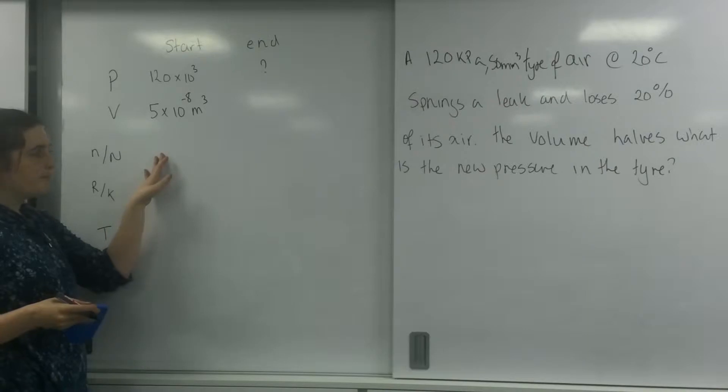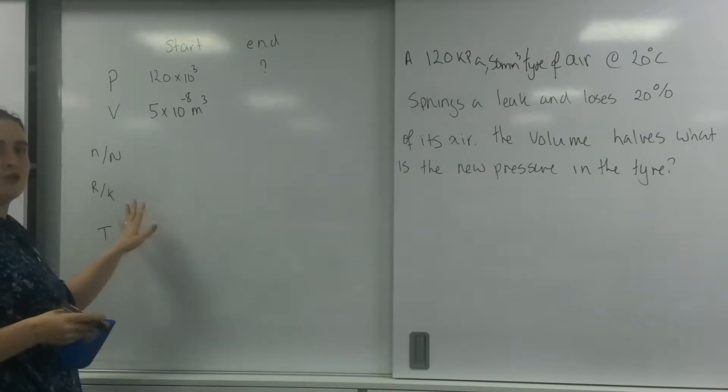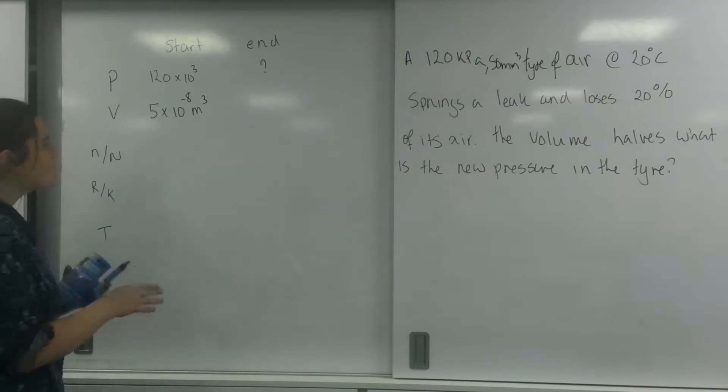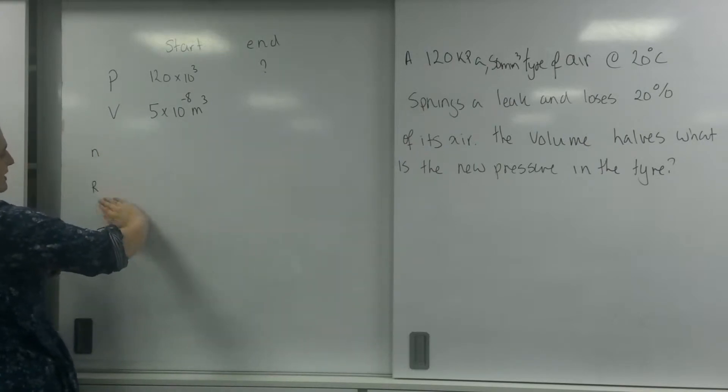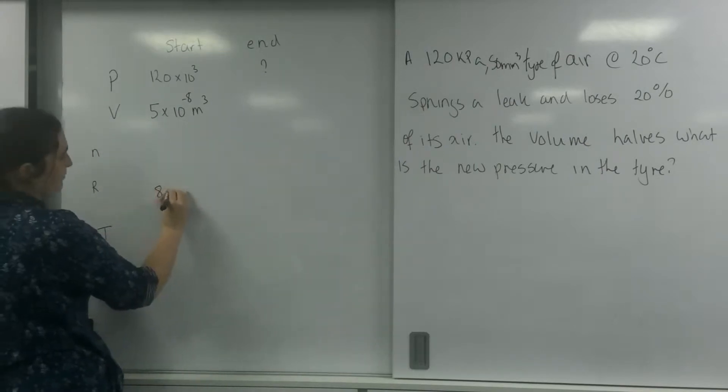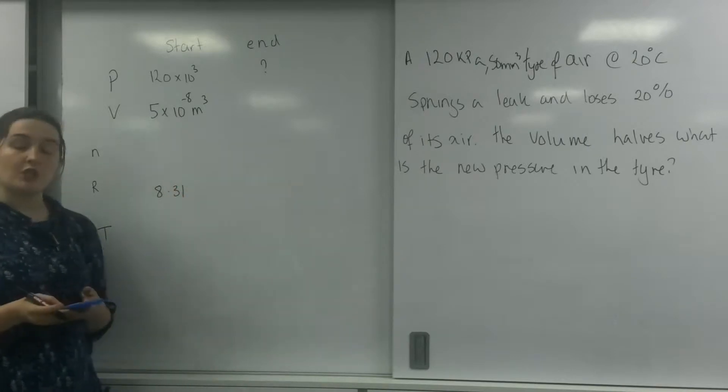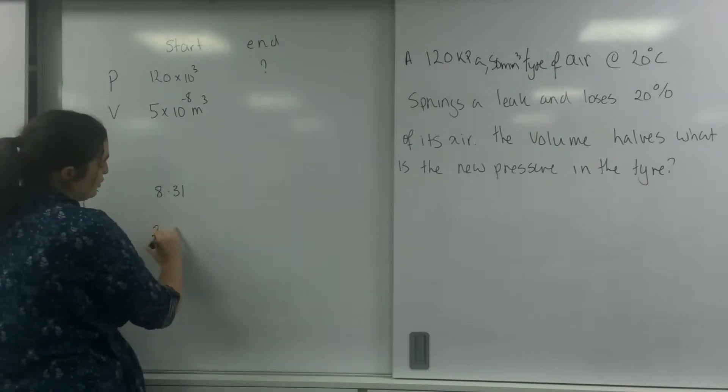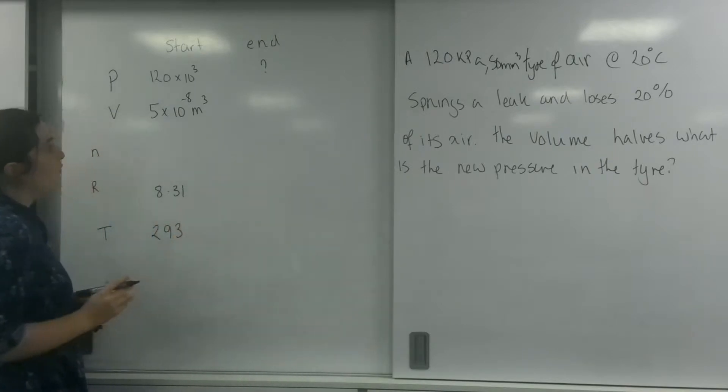I don't know what this is. I do know what these are. They're my constants, and depending on which one I'm going to choose, I'm going to use moles for this one. So I'm going to use this as 8.31. And I do know my temperature to start with is 20 degrees. Remember, you must convert into Kelvin, so it's going to be 293 Kelvin.